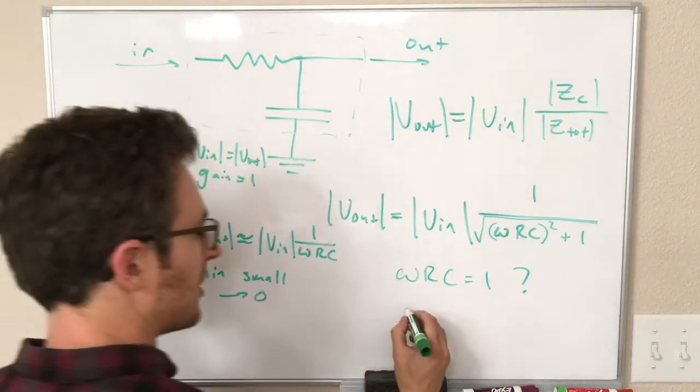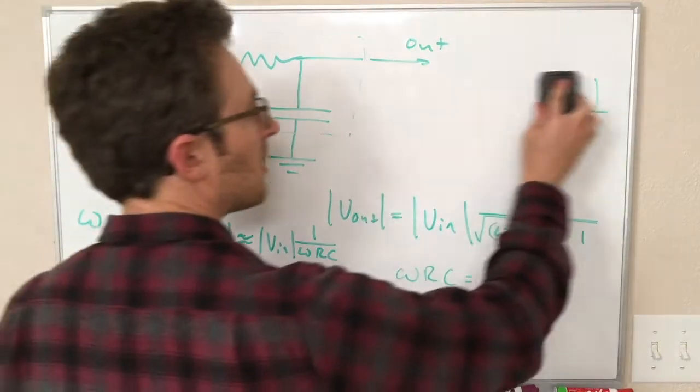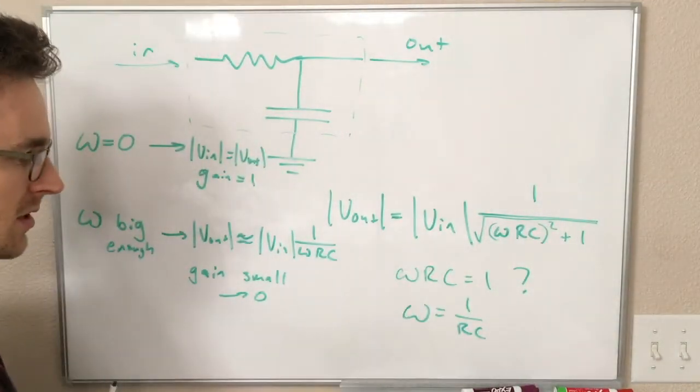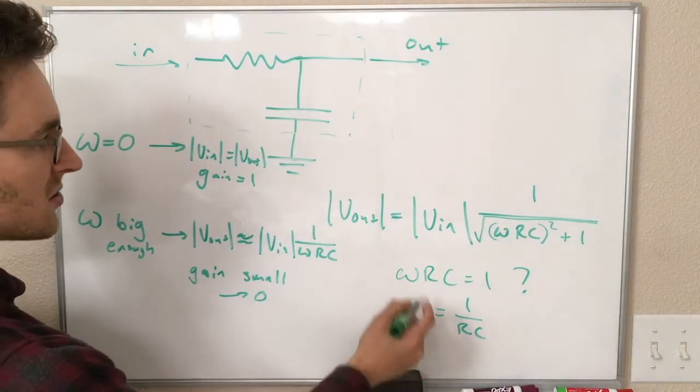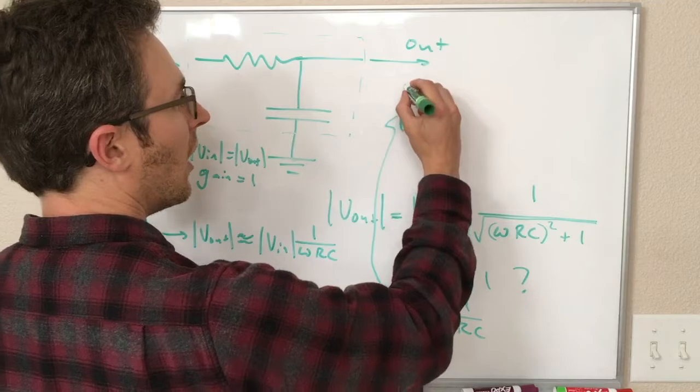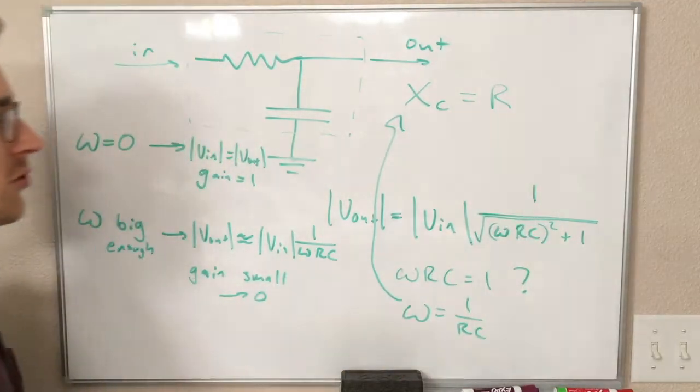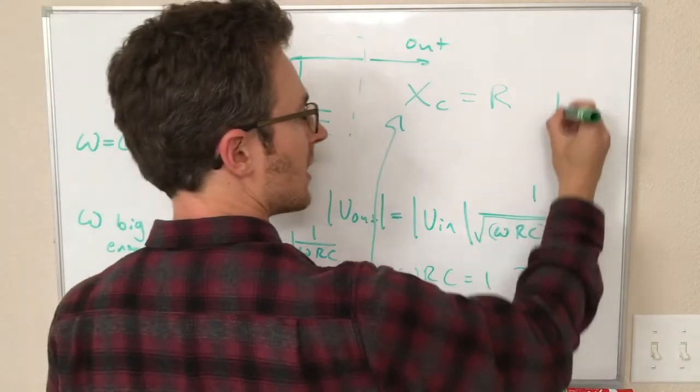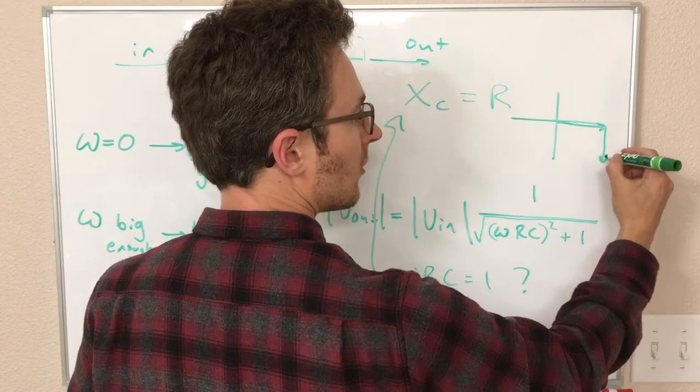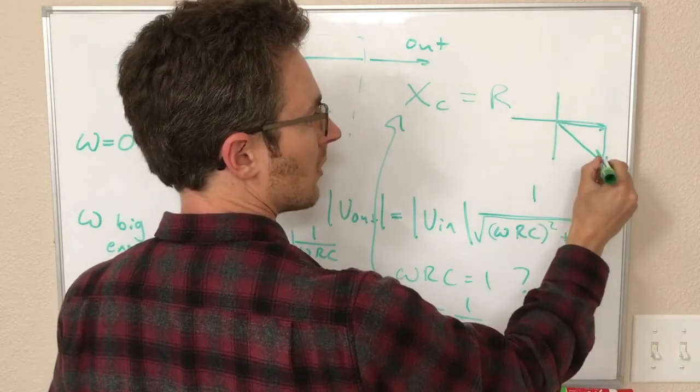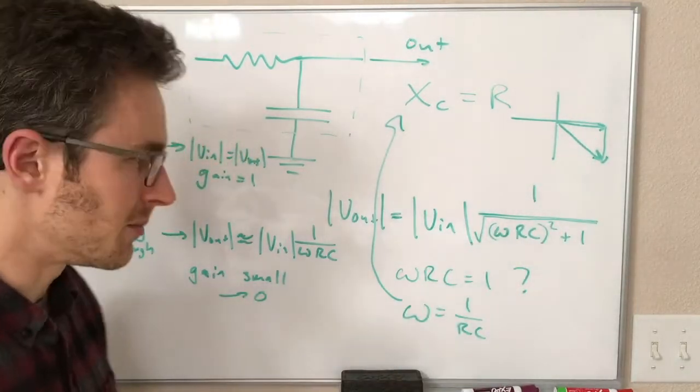It turns out this is at a frequency of omega equals 1 over RC. If you plug in some numbers here, you will see, this is not coincidentally, that this is also when the capacitive reactance is equal to the resistance. In other words, our impedance diagram looks like this. We have our resistance and our reactance. We are at a 45 degree angle because these two things are the same size.